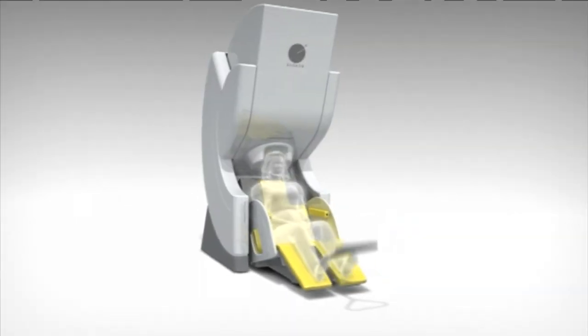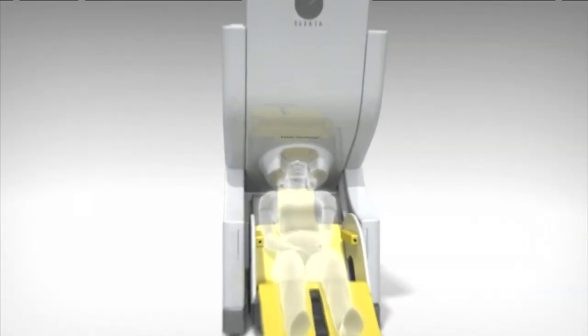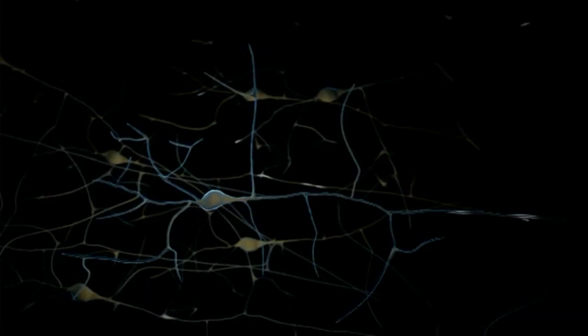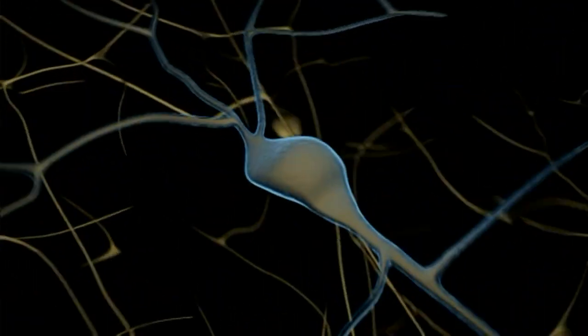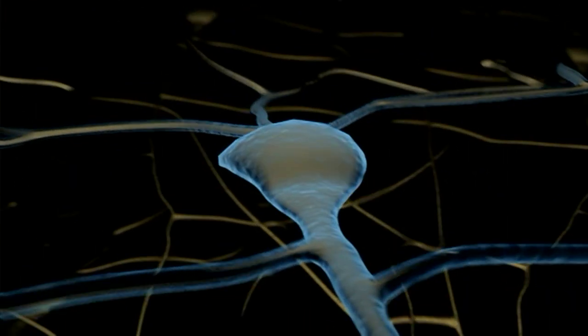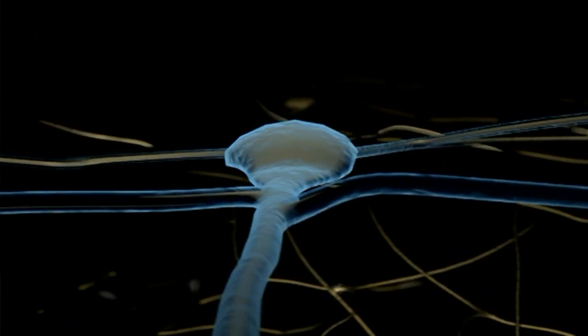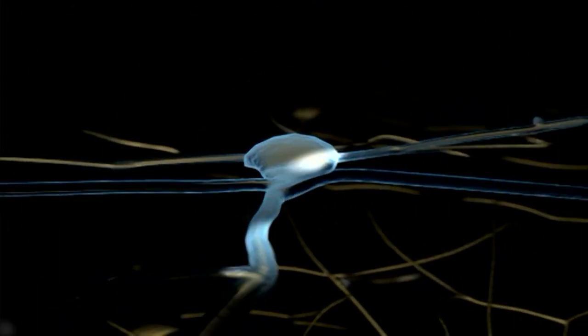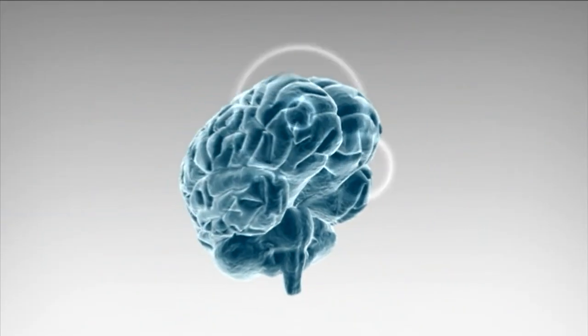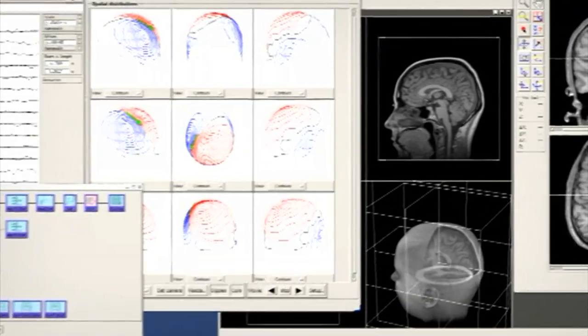One way we study the human visual system is with a technique called magnetoencephalography, or MEG. This is a way to measure the really small magnetic fields produced by the brain while we're doing various tasks like, in my case, recognizing objects. Unlike other methods, MEG allows us to look at how the brain represents objects on a millisecond-by-millisecond basis.